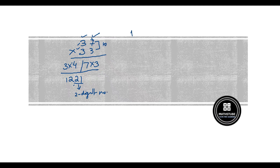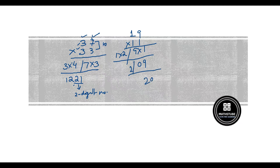Suppose the question is 19 into 11. Then 9 into 1 gives 09 — always write 2 digits — and 1 into 2 is 2. So answer is 209. Another example: 25 into 25. Simply 5 into 5 is 25, and 2 with its successor: 2 into 3 is 6. So answer is 625.